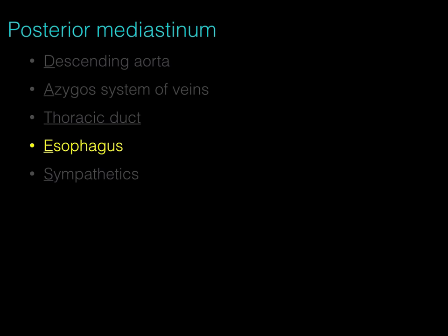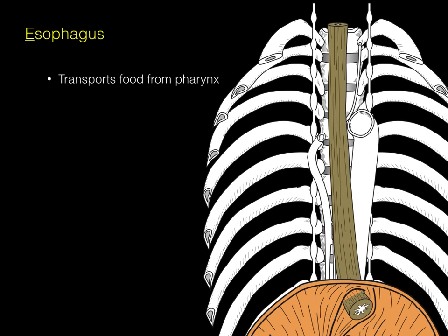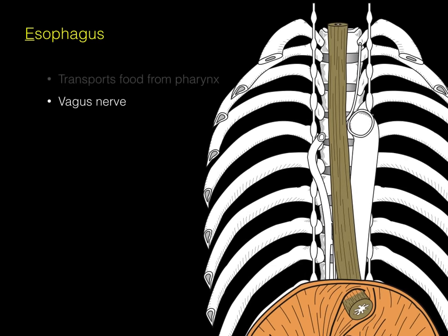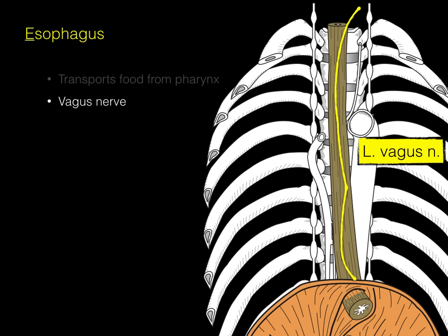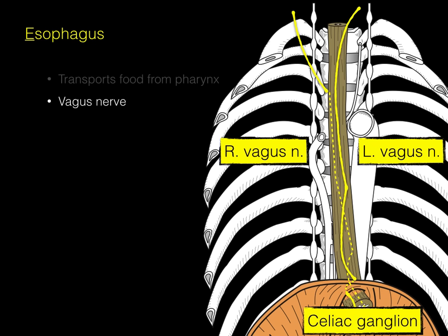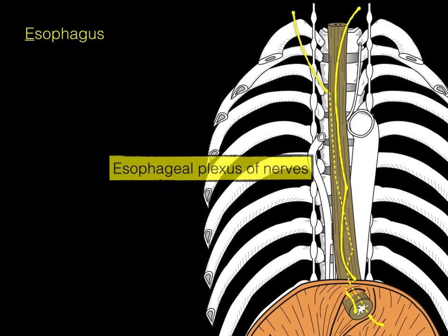The esophagus transports food from the pharynx down into the stomach, piercing the diaphragm at the esophageal hiatus at the T10 vertebral level. The vagus nerve innervates the esophagus: the left vagus nerve sends a branch to the front of the esophagus and courses along it into the abdominal cavity toward the stomach. The right vagus nerve goes posterior and deep to the esophagus. Both right and left vagus nerves travel to the celiac ganglia — they don't synapse there but course with the sympathetics to the foregut and midgut, forming an esophageal plexus around the esophagus.